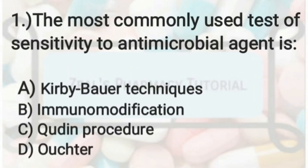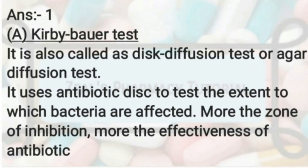The first question is: the most commonly used test of sensitivity to antimicrobial agents is — Kirby-Bauer technique, immune modification, Whedon procedure, or Orcher? The correct answer is the Kirby-Bauer test. It is also known as the disc diffusion test. It uses antibiotic discs to test the extent to which bacteria are affected — the greater the zone of inhibition, the greater the effectiveness of the antibiotic.